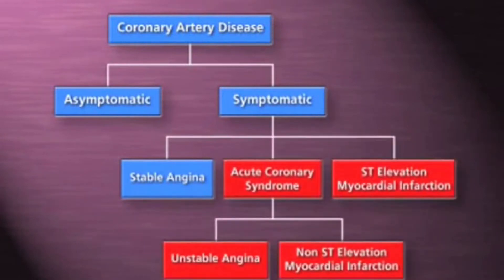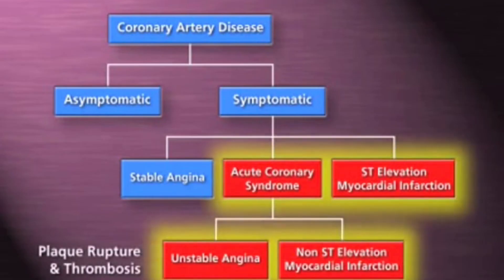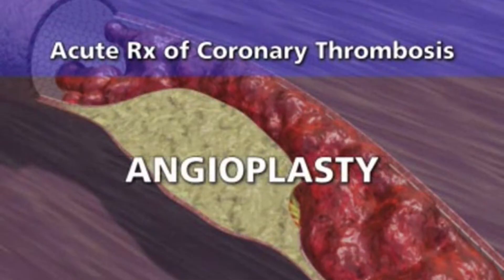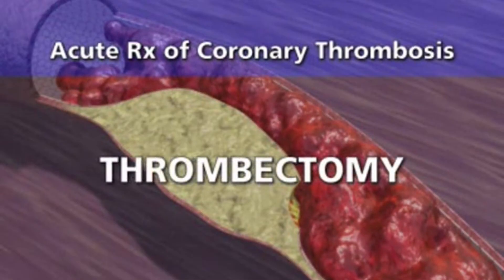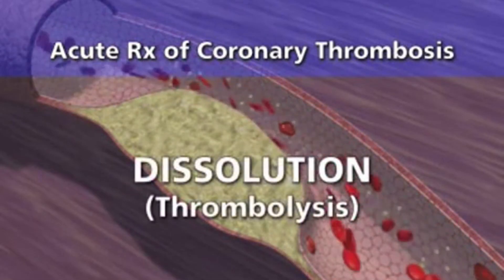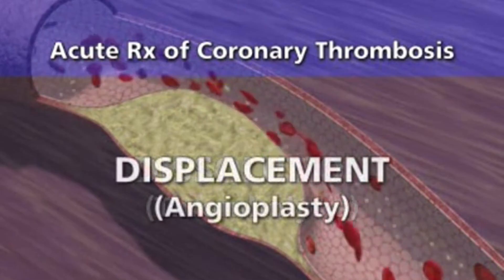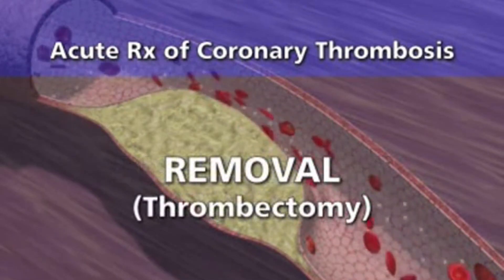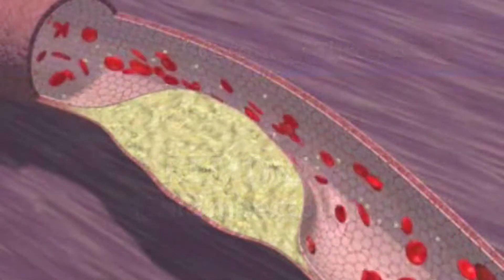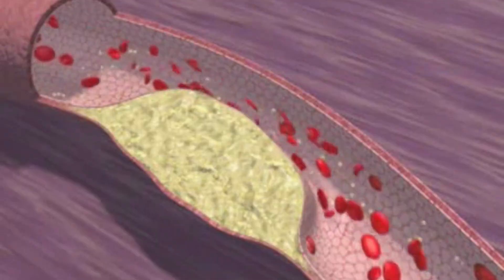Plaque rupture with coronary thrombosis is the most common cause of acute life-threatening coronary artery disease. Emergency therapy by thrombolysis, angioplasty, or thrombectomy restores blood flow by targeting thrombus — either dissolving it, displacing it, or removing it as quickly as possible. Rapid restoration of blood flow relieves symptoms and minimizes myocardial damage.